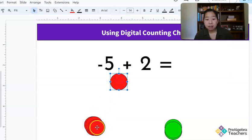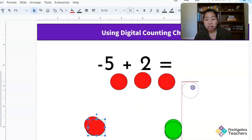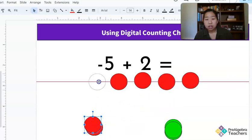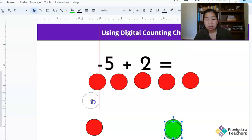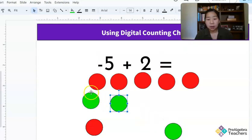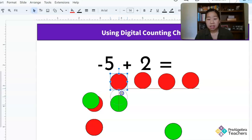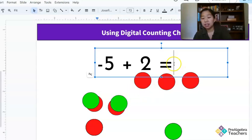Okay. So here I have five negatives. I'm going to bust out five negatives here. And then I have two positives. Okay. So how many of these zero out? So this one and this one zero out. So I'm left with negative three.